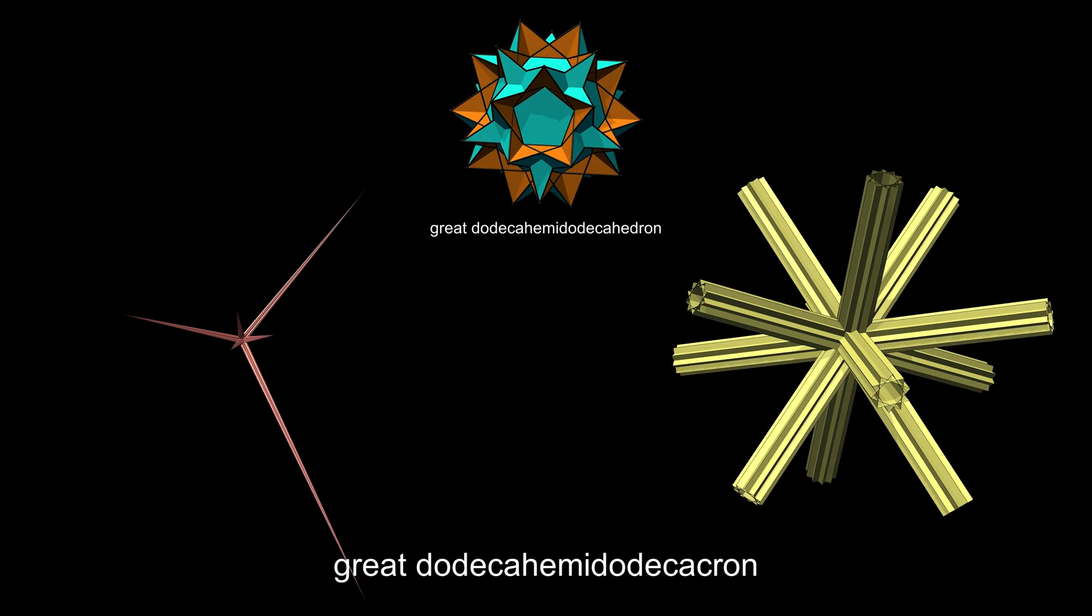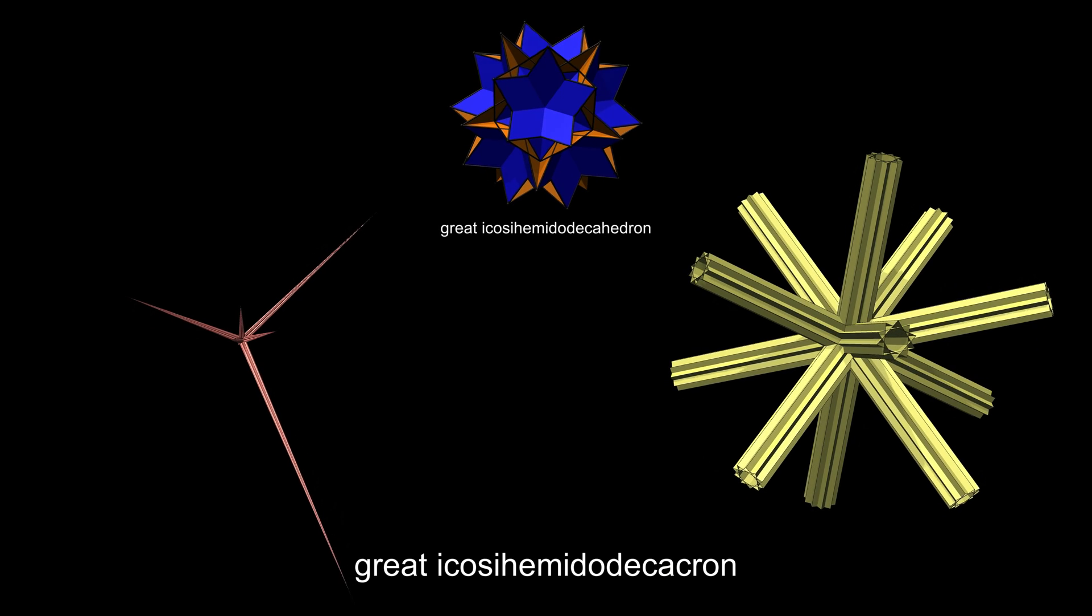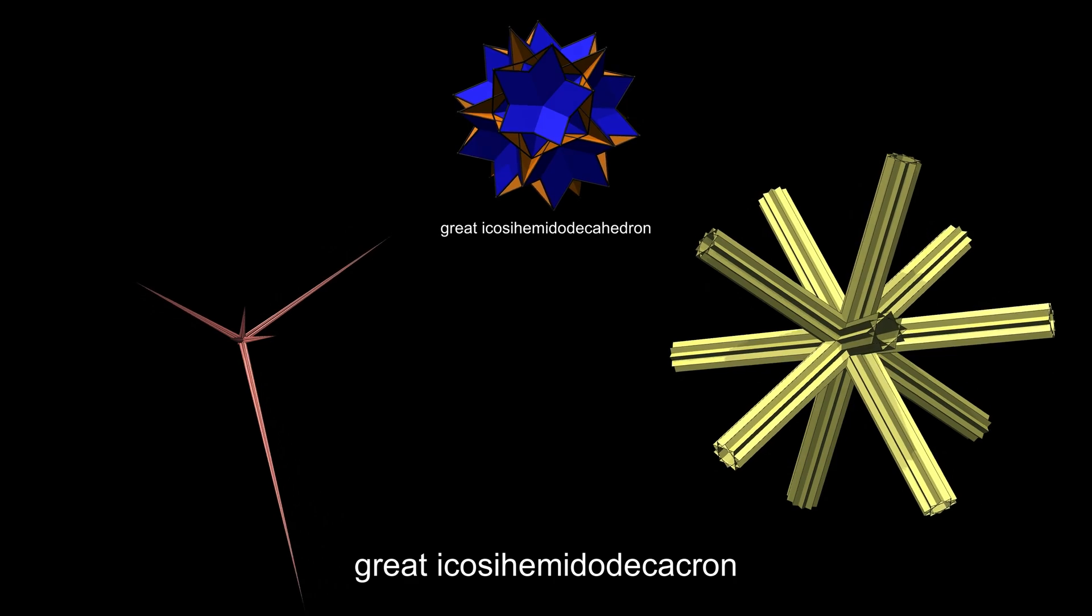The dual of the great dodecahemidodecahedron has six decagrammic spikes or prisms, and looks the same as the dual of the great icosihemidodecahedron.